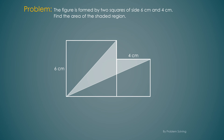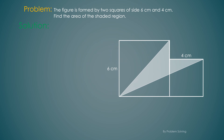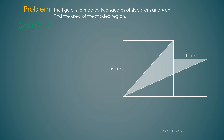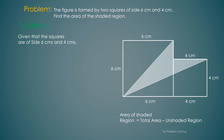Now let's go to the solution. We know that the length of the sides of the squares are 6 centimeters and 4 centimeters. To find the area of the shaded region, we have to subtract the unshaded region's area from the total area.